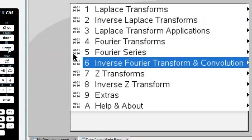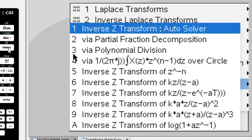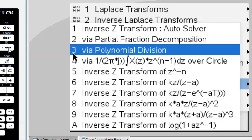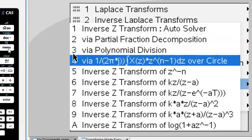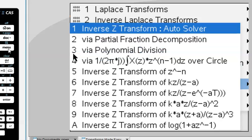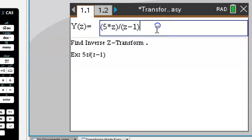For inverse z-transforms, you need different methods. We have the partial fraction, polynomial division, even the contour integral way of finding inverse z-transforms. So, let's do an example.